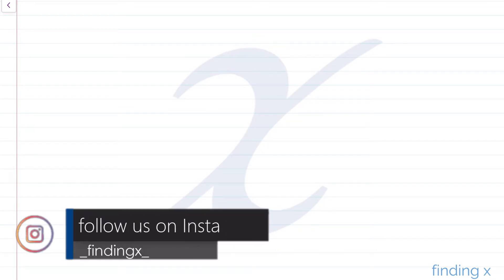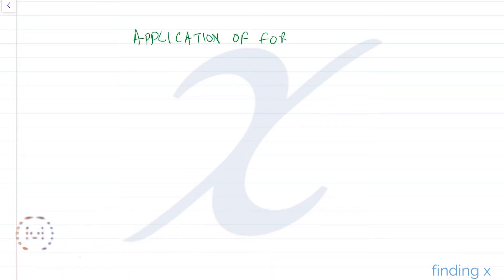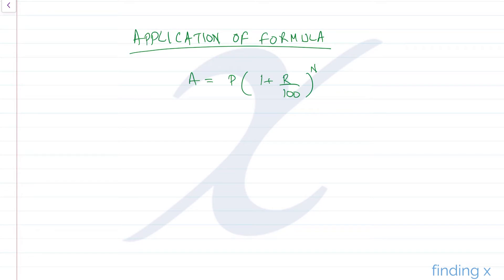Welcome to Finding X. Today we will see Practice 14.2. We are going to learn the application of the compound interest formula. If you remember, the formula of compound interest is A = P × (1 + R/100)^N. We will use this formula in different real-life scenarios.